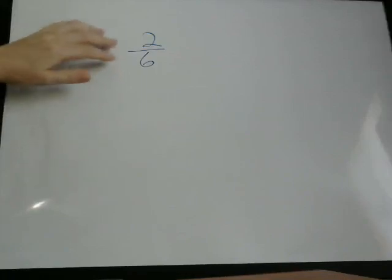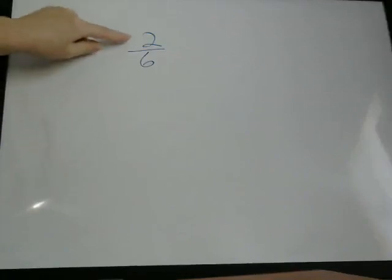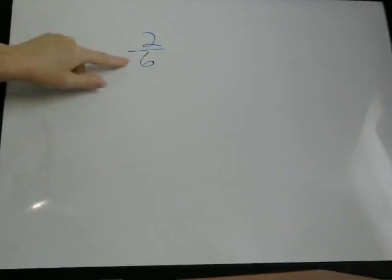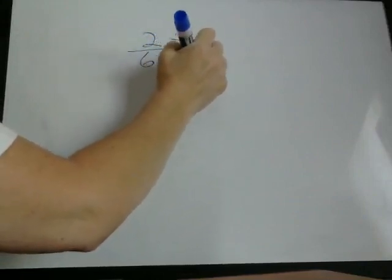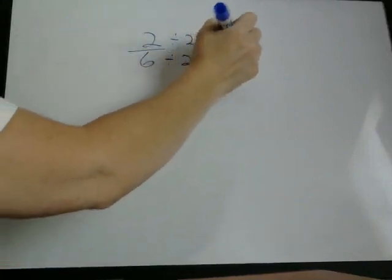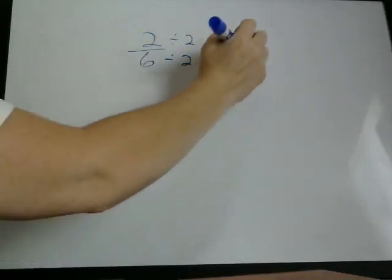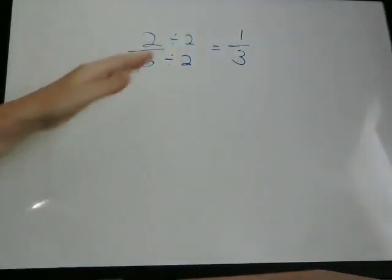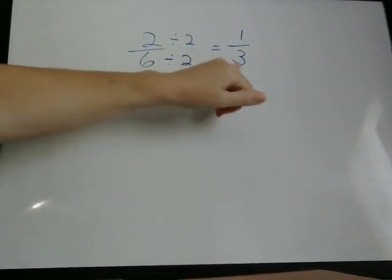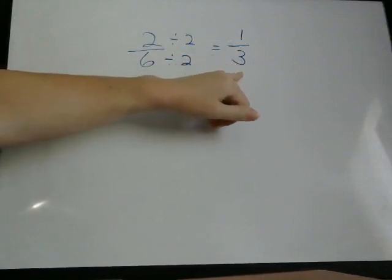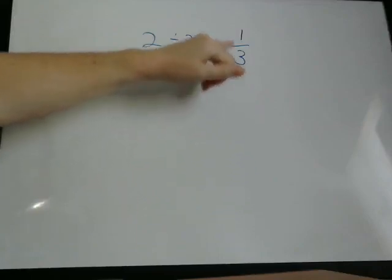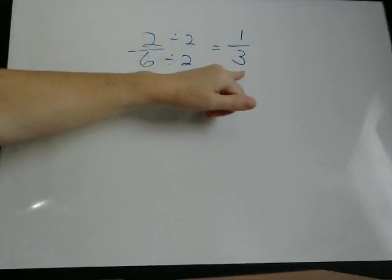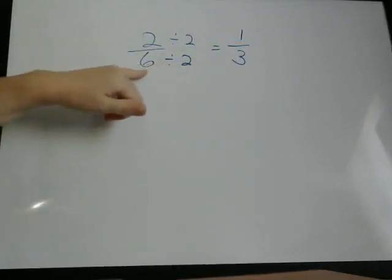So for example, 2 sixths, the numerator 2 and the denominator 6 can both be divided by 2 evenly. And if we do that, 2 divided by 2 is 1, 6 divided by 2 is 3, so now 2 sixths is really the same as 1 third. Now there's no number other than 1 that can be evenly divided into 1 and 3, so this is lowest terms for this fraction.